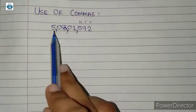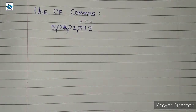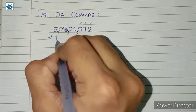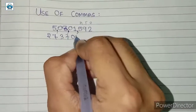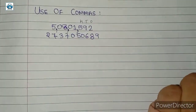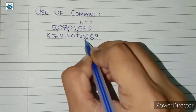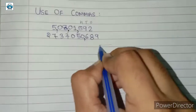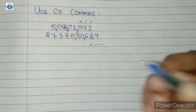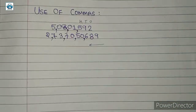The third comma will come after 2 numbers, and if we have a fourth comma it will come after 2 numbers in the same way. So consider another number: 2737050689. We need to write it with the help of commas. The first comma comes after 3 digits, then after 2 digits, again after 2 digits, and again after 2 digits.